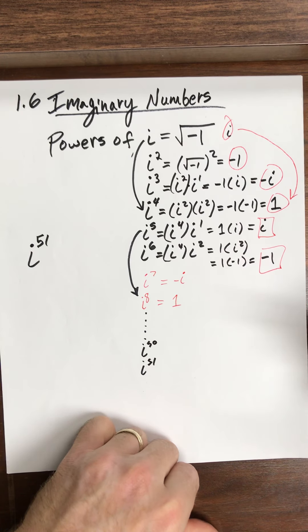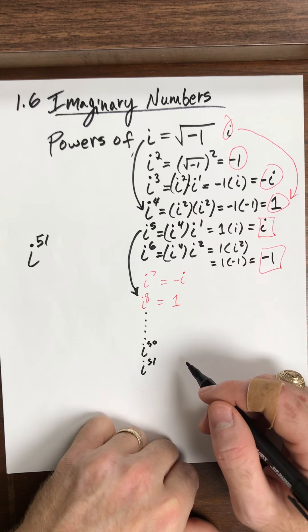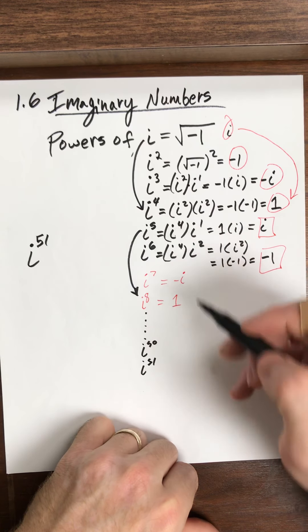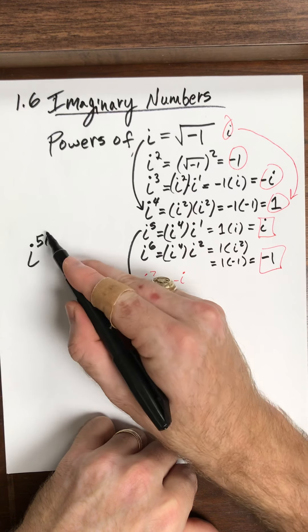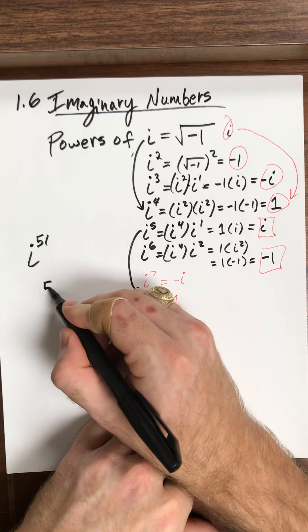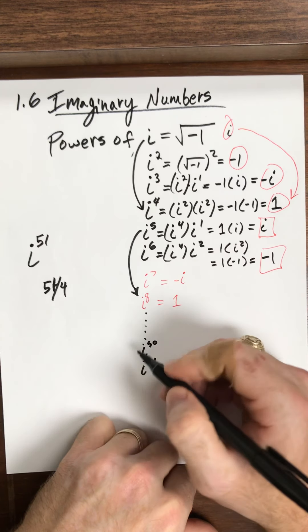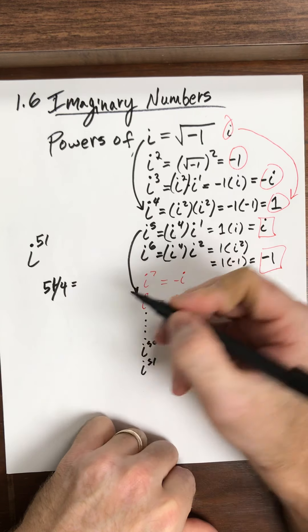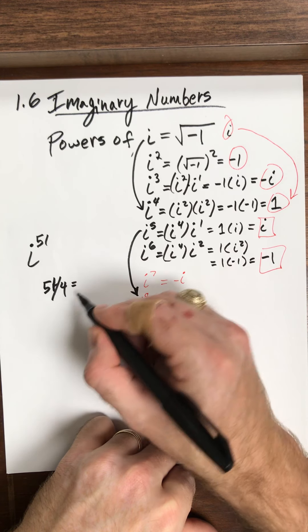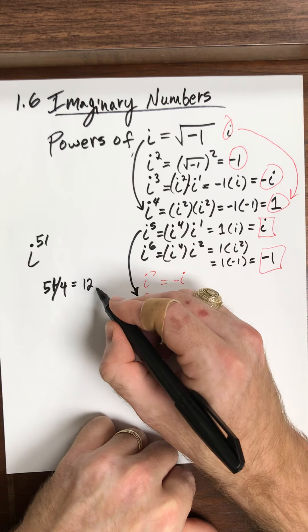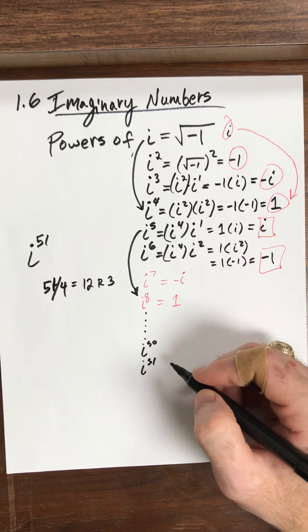So what do I do? I take this exponent. I don't want to break it up in a clever way. I want to break it up into powers of 4. So let's see. How many times will 4 go into 51? So 4 goes into 51 how many times? Let's see. 12 is 48, I think. 12 is 48. And then I have a remainder of 3.